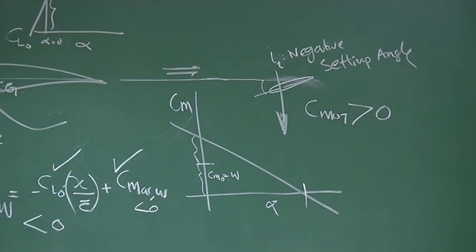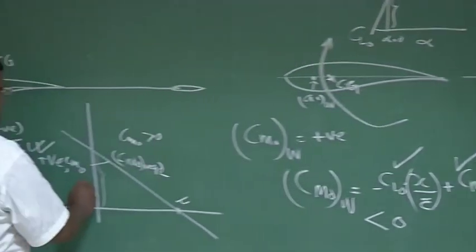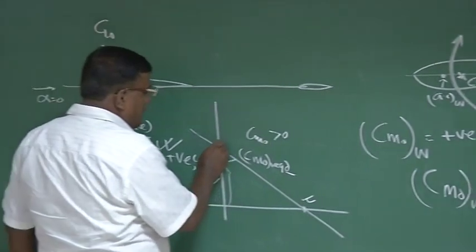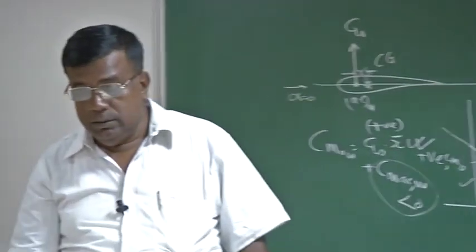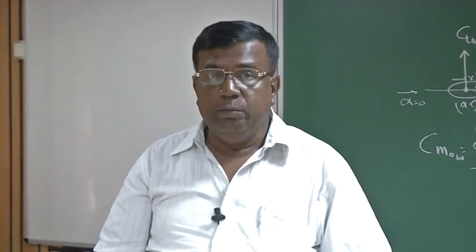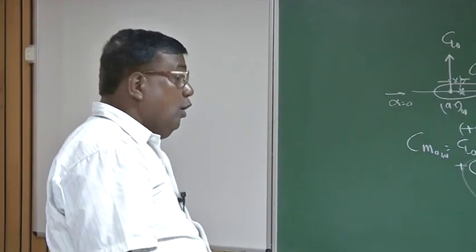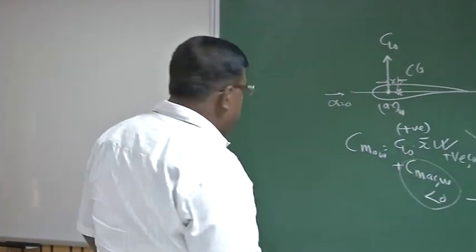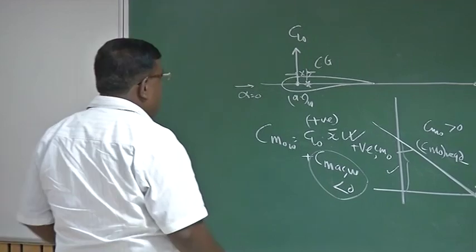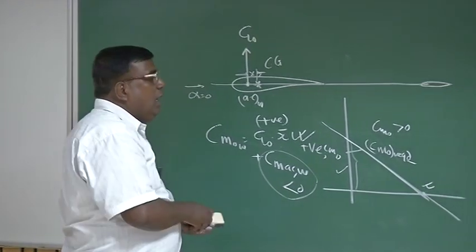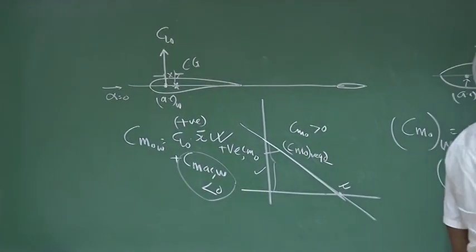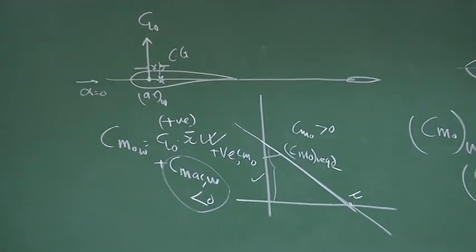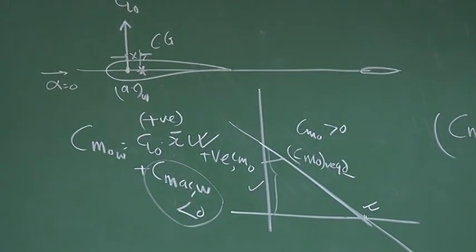CM0 part is over. The next question is: how do I get this slope? How much slope? There was a big question — how much static stability? Because we know, if you make it very high in stability, then to manoeuvre it will be difficult. Let us address that question.